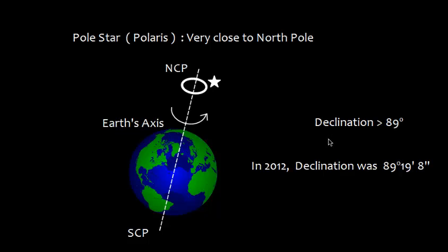The declination is equivalent to geographical latitude. So, for North Pole, declination is 90 degree and declination of Polestar is more than 89 degree.